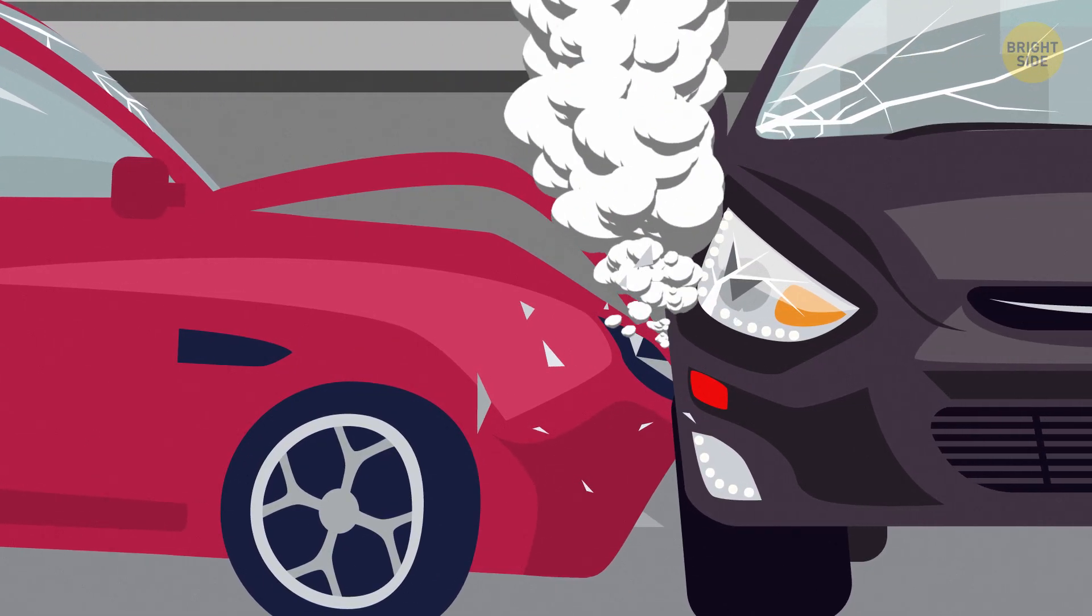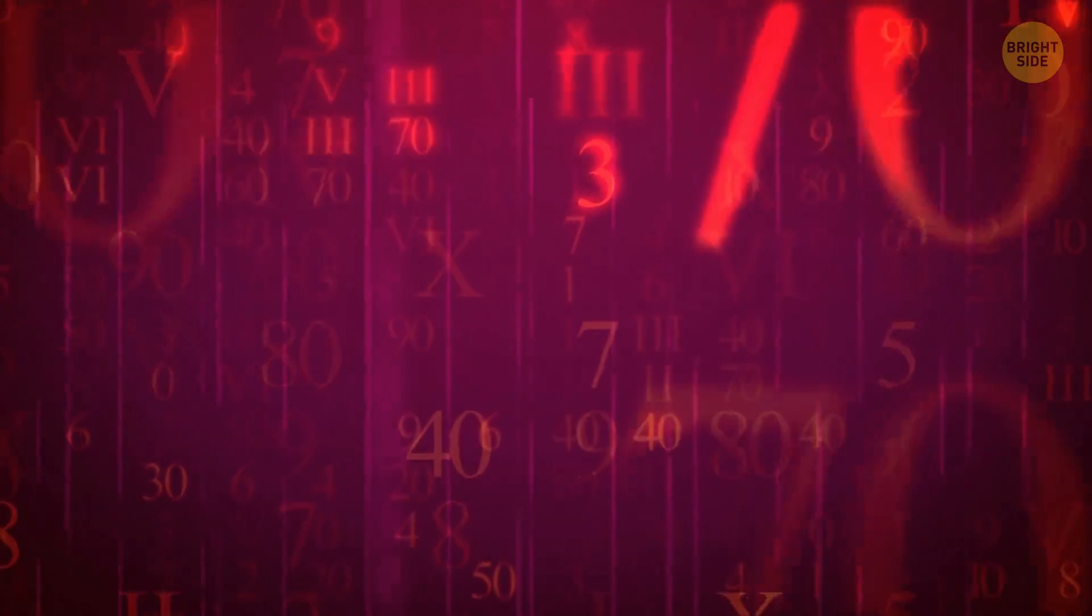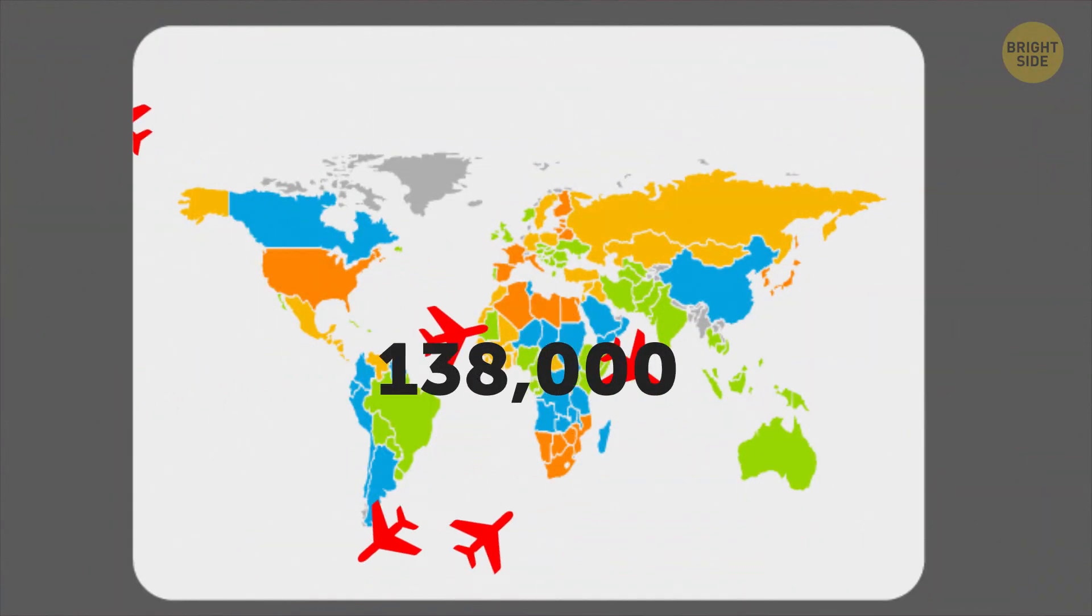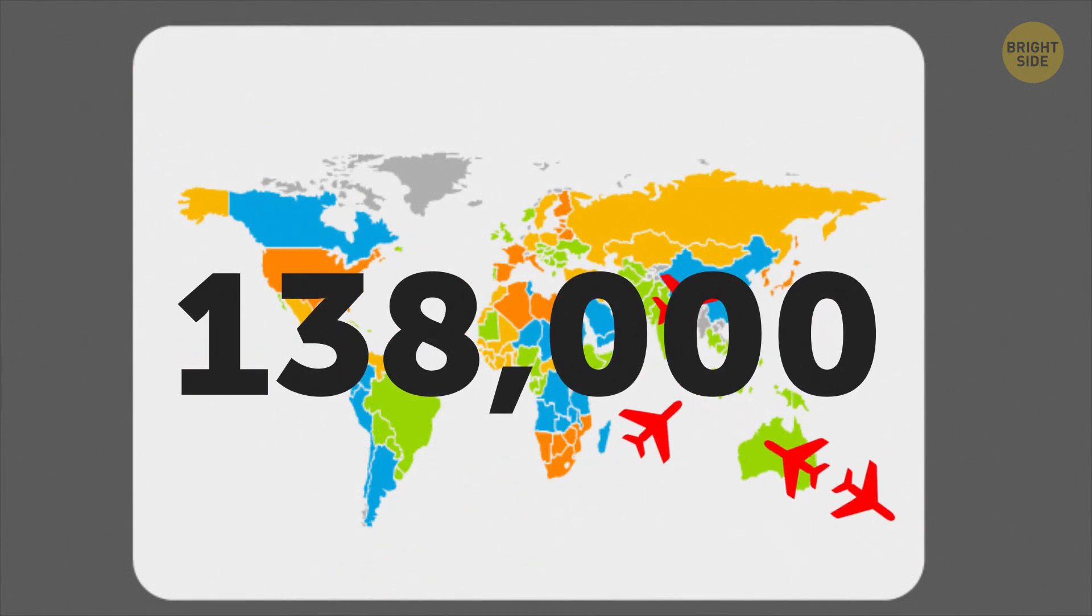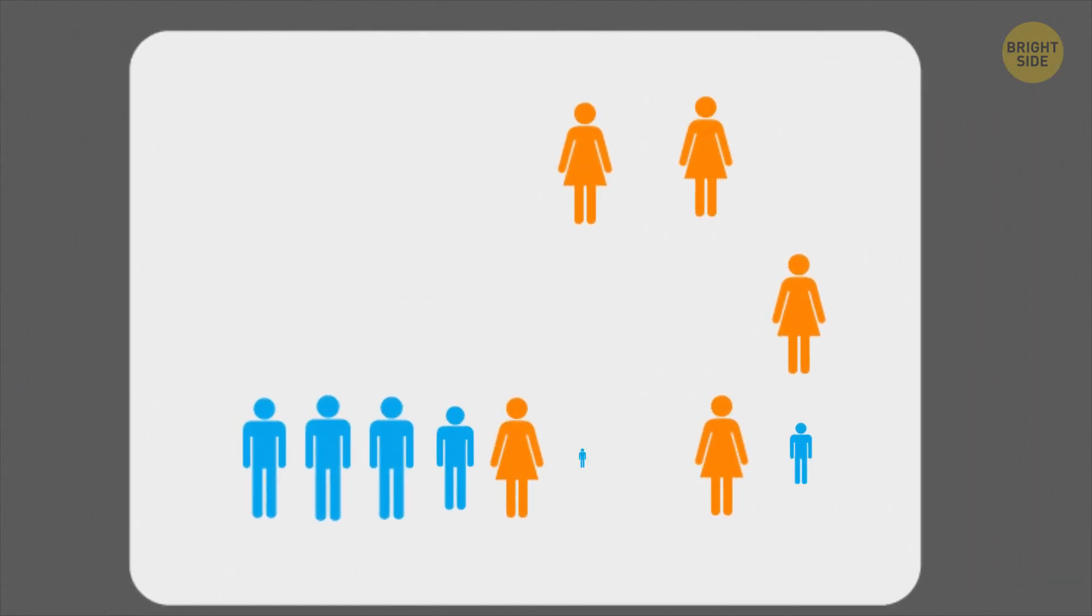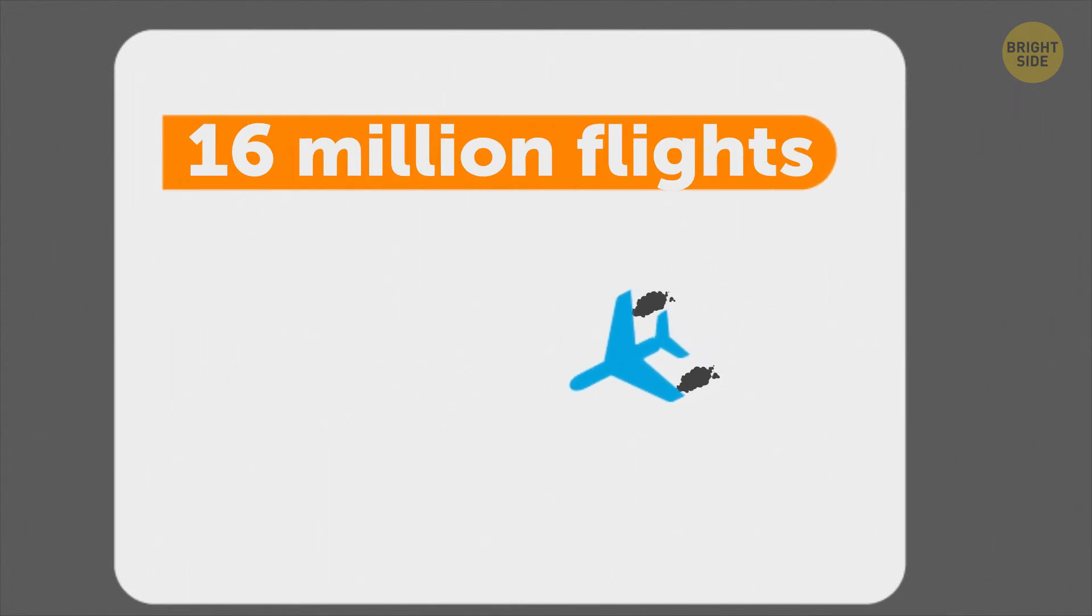How on Earth is that possible? Well, let's check out the figures and make our own conclusions. Airplanes around the world make 138,000 flights a day. 48 million flights a year transport 5 billion passengers. Only one airplane crash happens per about every 16 million flights on average.